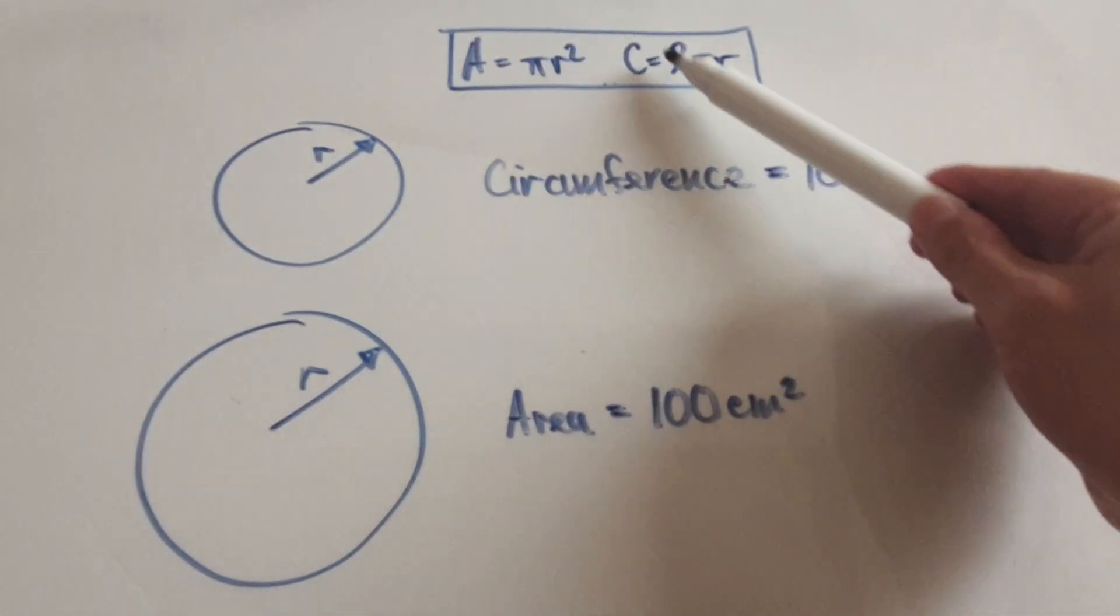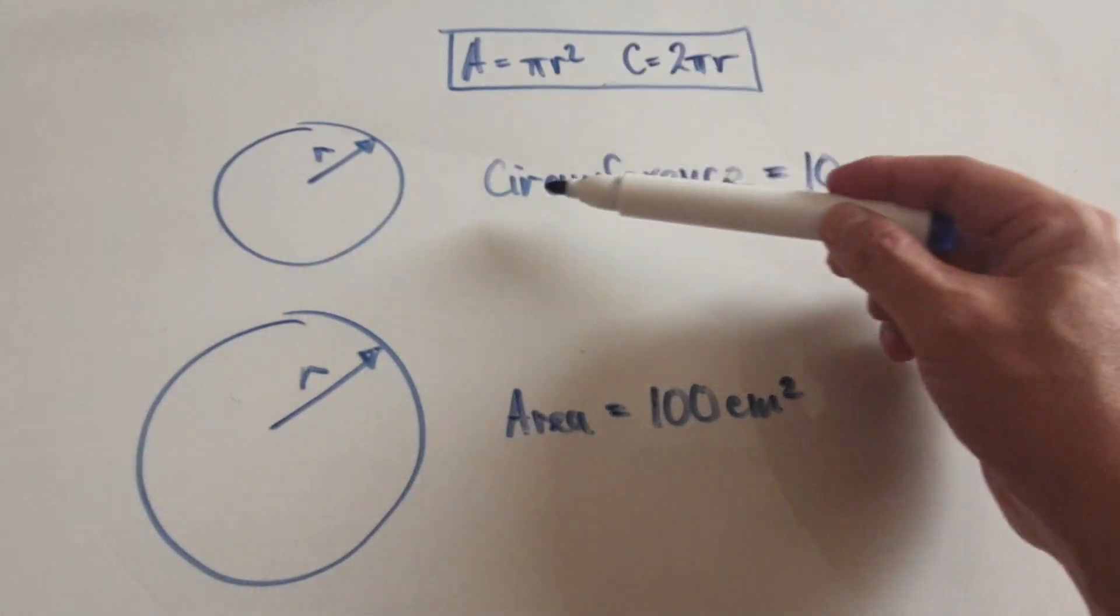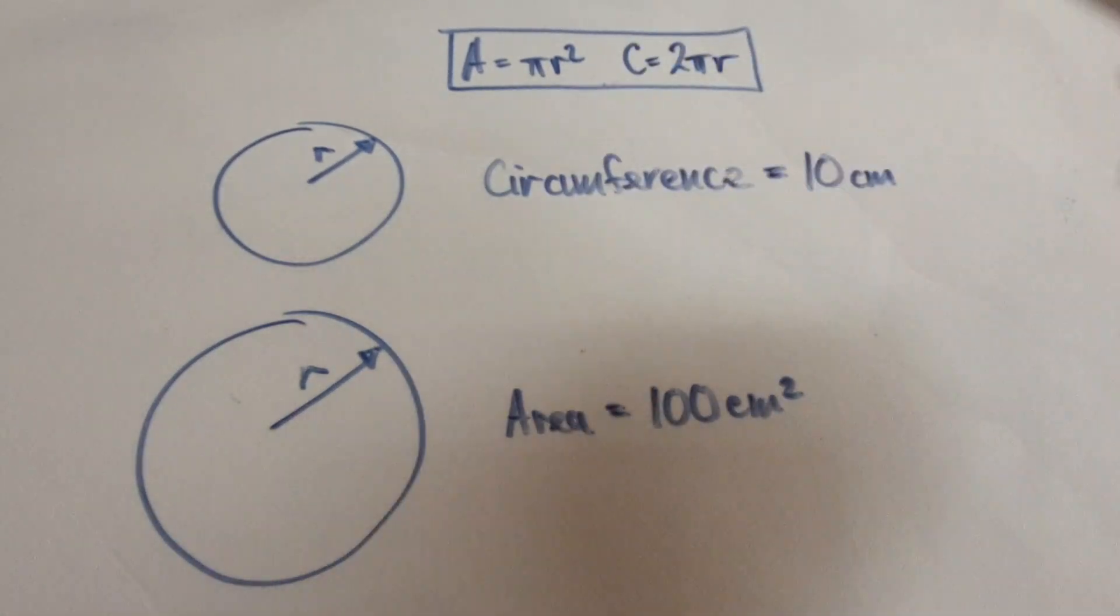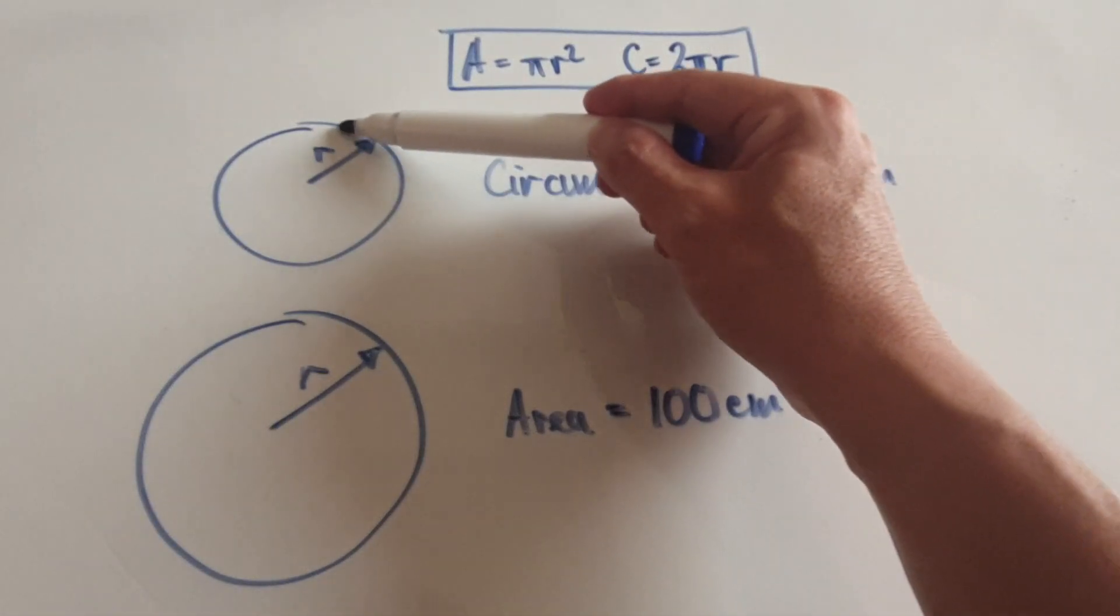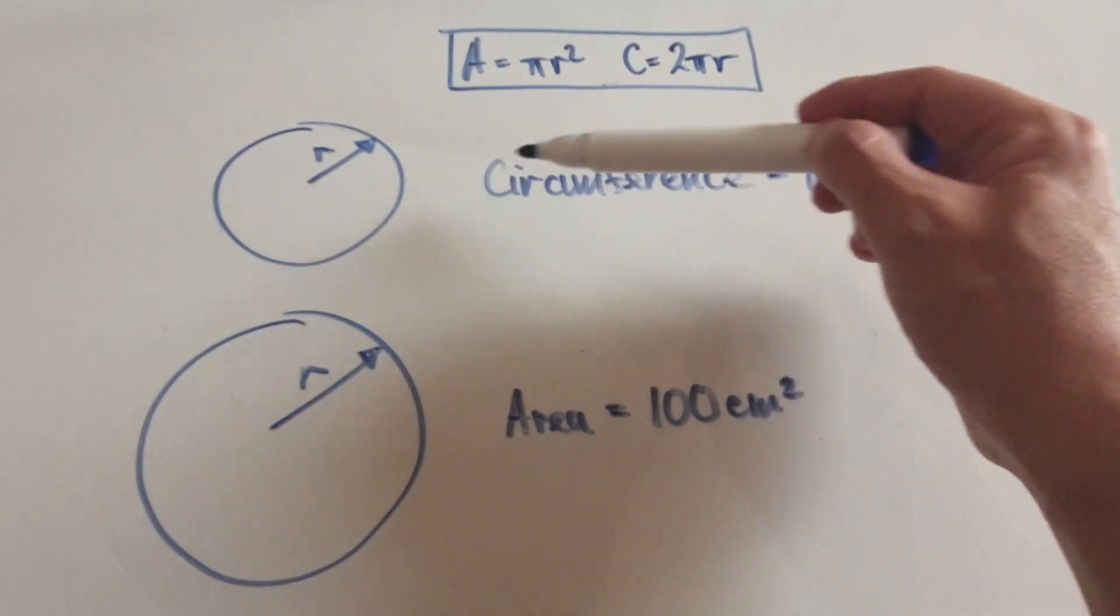Two very important formulas in math which you must know by heart: if someone gives you the circumference of a circle, the distance around the outside, and the circumference is 10 centimeters, you can work backwards to find the radius of a circle.